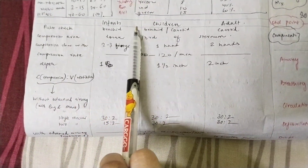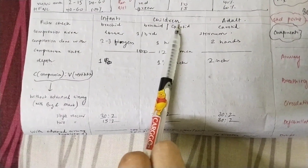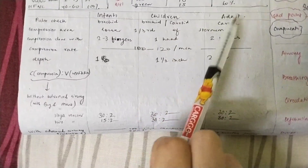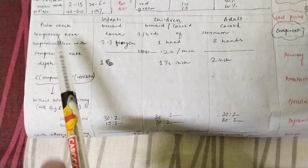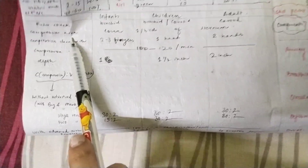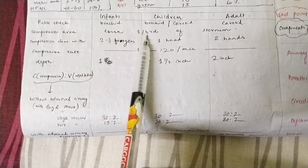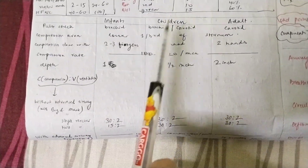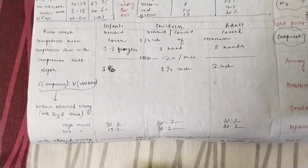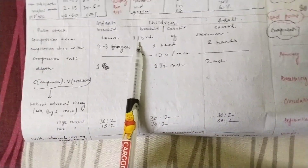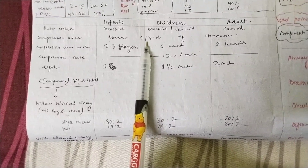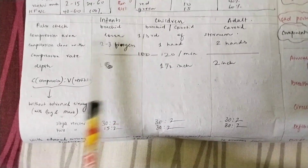If it is an infant, check the brachial pulse. If it is a child — more than 1 year of age up to 18 years — check the brachial or carotid pulse. For adults, always check the carotid pulse. For compression location: in infants, give it at the lower one-third of the sternum. For children and adults, also target the lower one-third of the sternum.